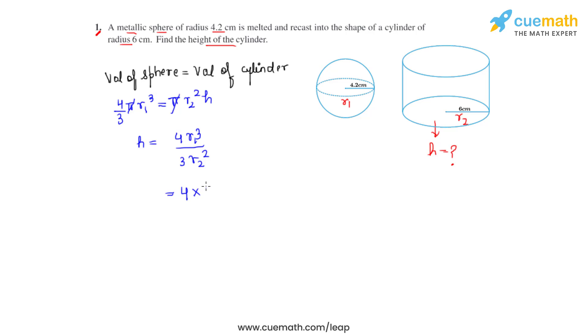Let's substitute the values. We can write it as 4 times r1 cube, that is the radius of the sphere 4.2 times 4.2 times 4.2, and this whole is divided by 3 r2 square, so 3 times 6 times 6.